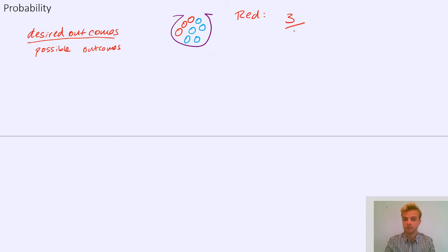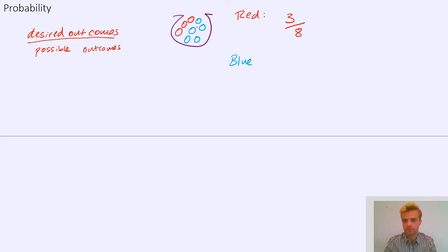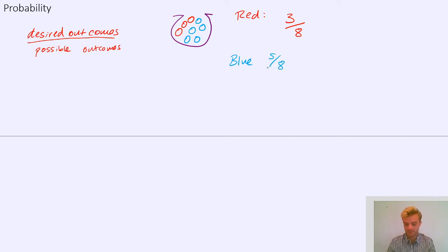The number of possible outcomes — well, how many balls are there altogether? There are eight balls. So the probability that I pick a red one is three out of eight. The probability that I pick a blue one: there are five blue balls out of eight possible outcomes. So it's five eighths.